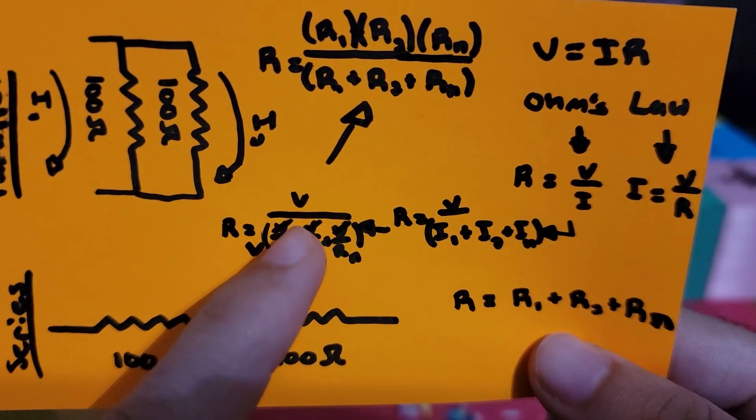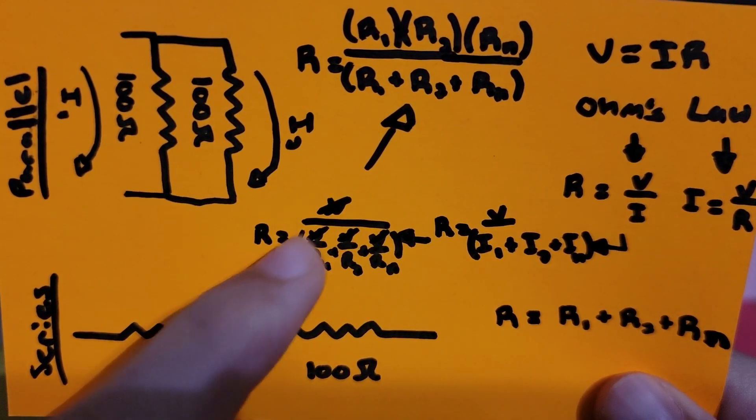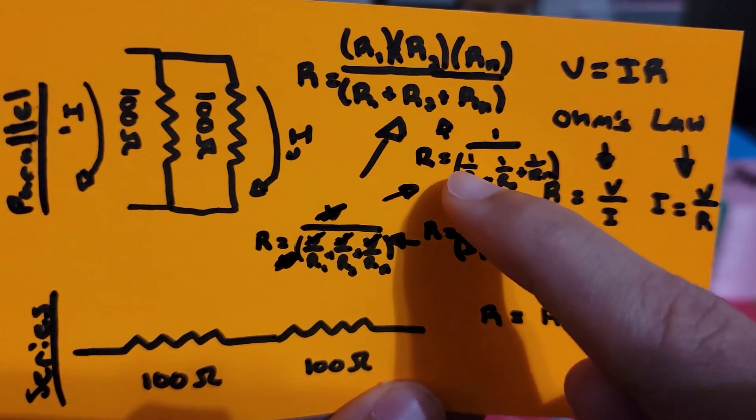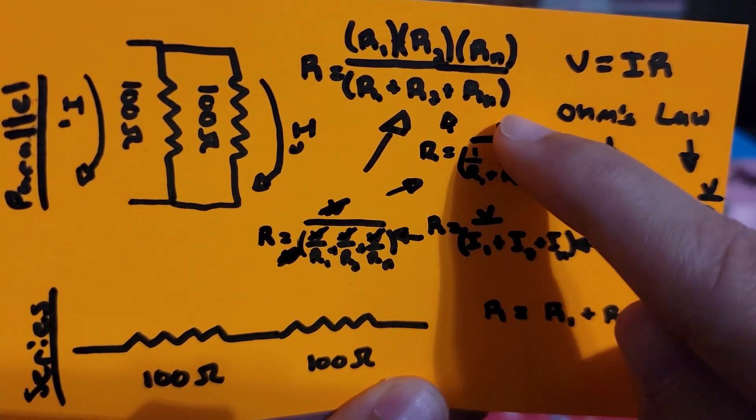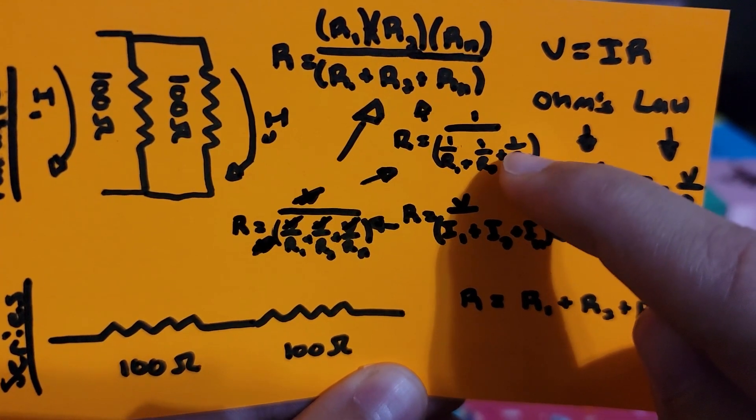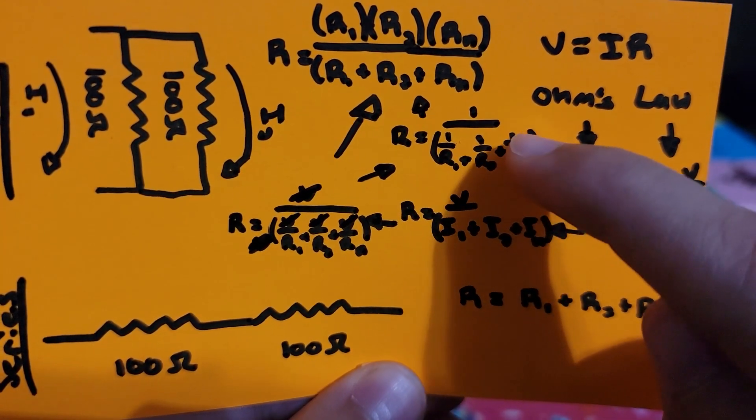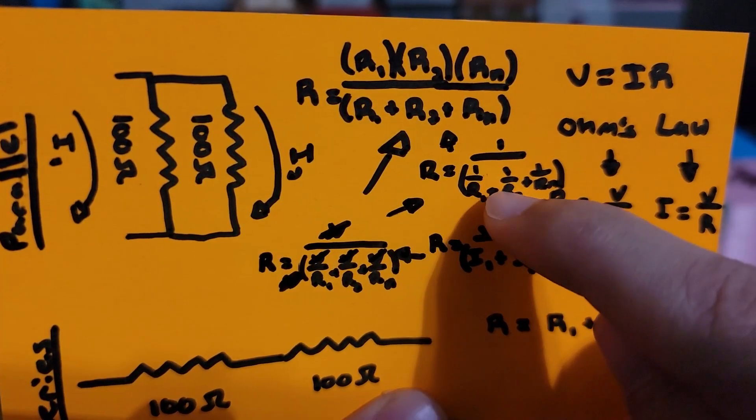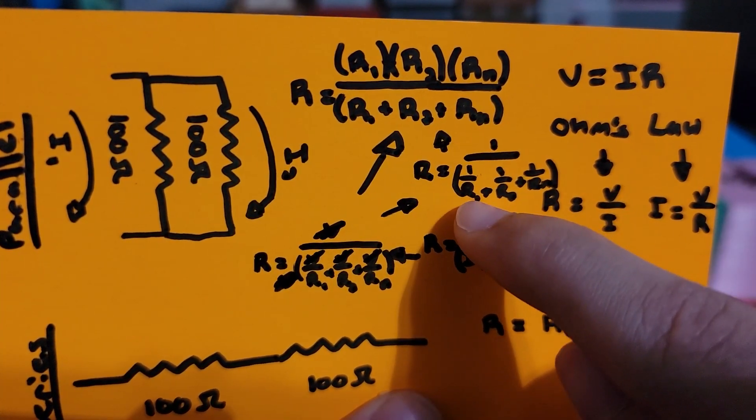So then you'd be left with the total resistance being equal to one over one over the first resistor plus one over the second resistor plus one over any other resistor connected in parallel. By solving for common denominators, then being able to add up everything here in parentheses, then inverting the denominator to result in this final equation.